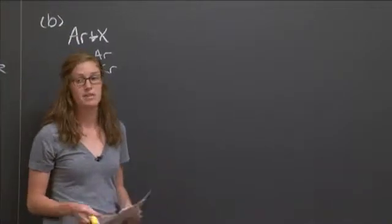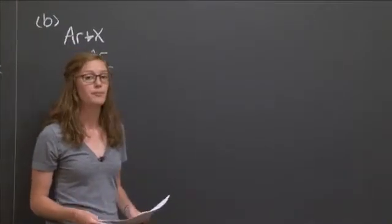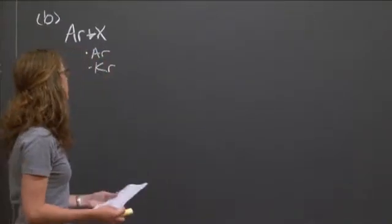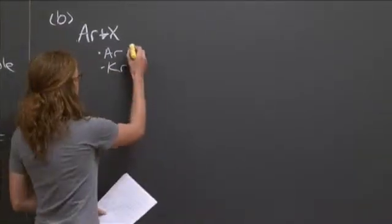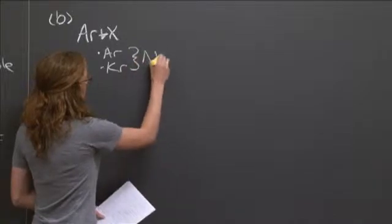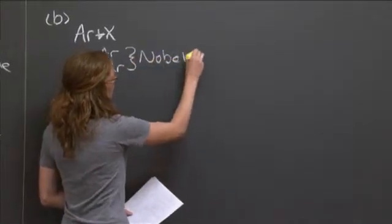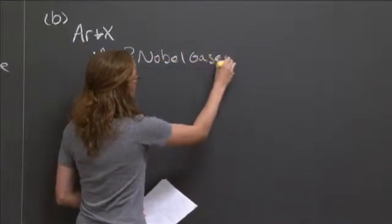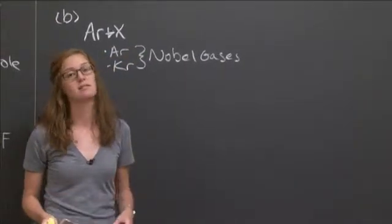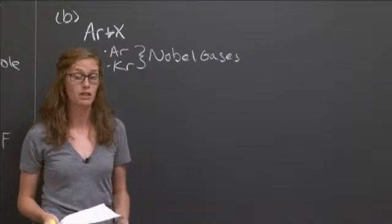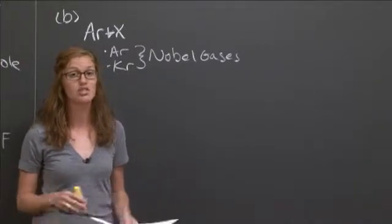Now we need to look at the specific species we are asked to consider here. Argon and krypton are both noble gases. And what do we know about noble gases? They have complete octets. They don't bond very often, especially to each other.